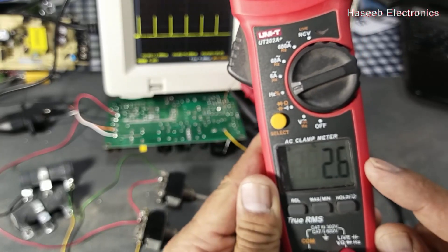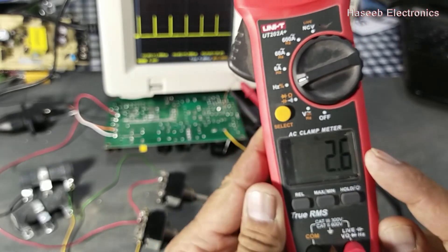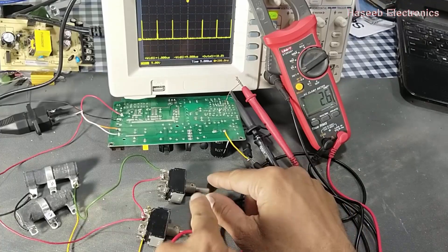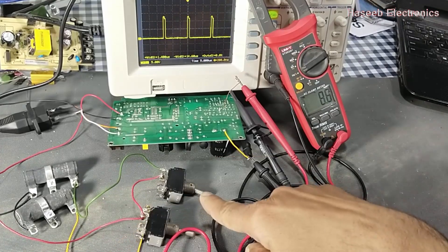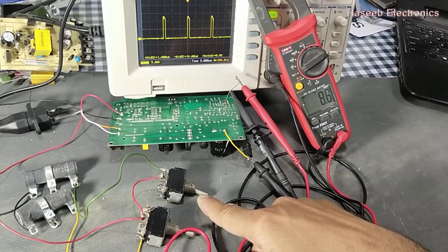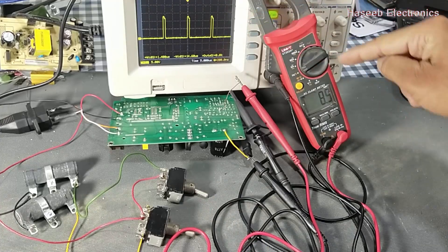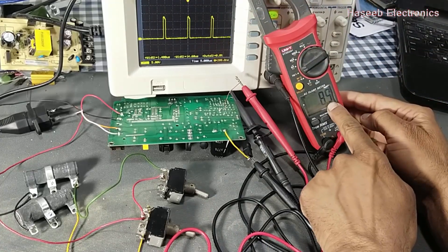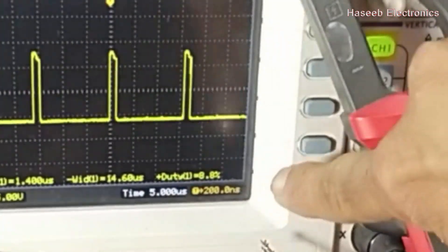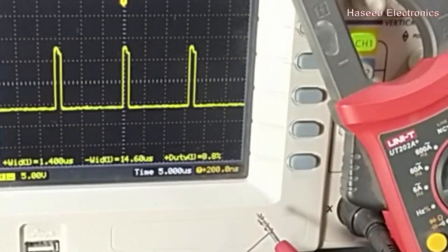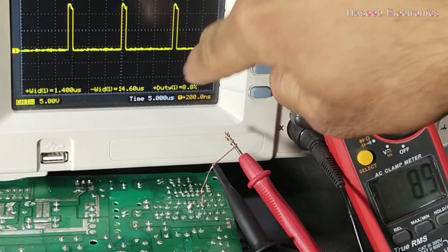It is giving 2.6 percent duty cycle. If I increase the load, now it is switching at 8.9 percent. On the scope there is 8.9 percent - it is switching at 8.9 percent duty cycle, and here it is also 8.9 percent.